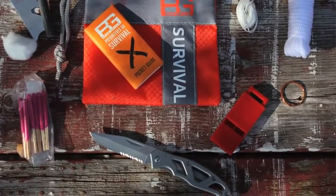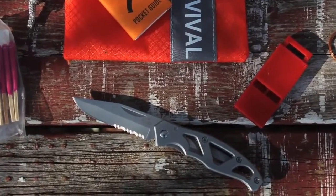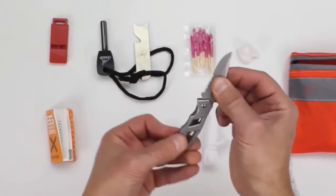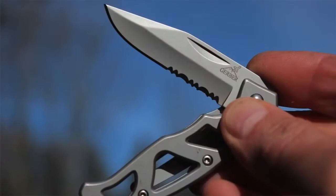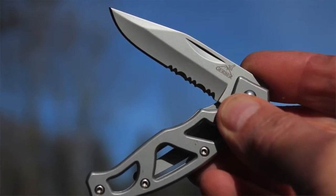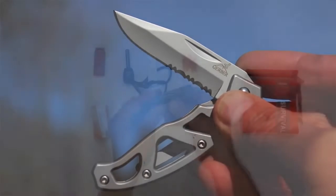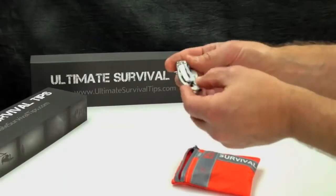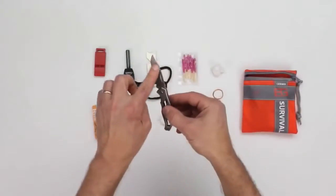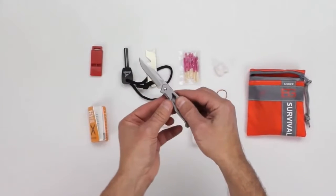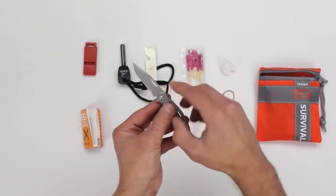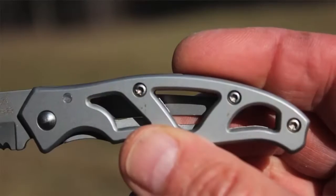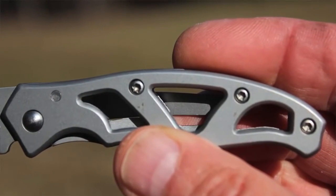Last but not least, we have the key item that really pushes this kit over the edge and makes it well worth a sub-$20 investment: the Gerber mini paraframe knife. This is a proven, tough, high carbon stainless steel pocket knife that's been around for a while. The knife easily slips into your pocket, has a sturdy belt clip on the back, has an overall length of six inches with a blade length of 2.2 inches. The blade is about half serrated and half fine edge.